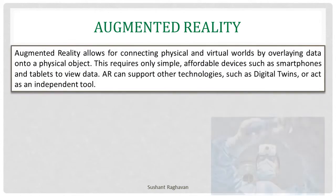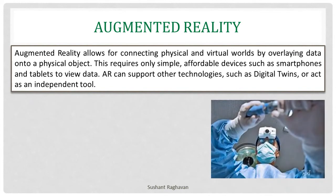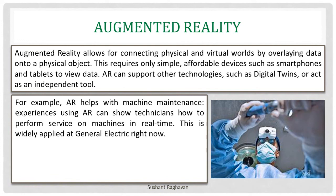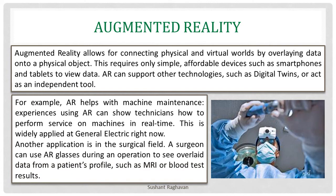Augmented reality is another smart factory solution, allowing for connecting physical and virtual worlds by overlaying data onto a physical object. This requires only simple, affordable devices such as smartphones and tablets to view data. AR can support other technologies such as digital twins, or act as an independent tool. For example, AR helps with machine maintenance — technicians can use AR to see how to perform service on machines in real time, as widely applied at General Electric. Another application is in the surgical field, where a surgeon can use AR glasses during an operation to see overlay data from a patient's profile such as MRI or blood test results.